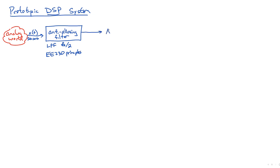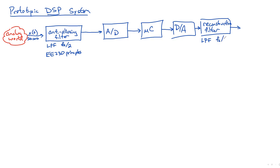Then we bring it into our A-to-D converter. We use a microcontroller or a computer to do all of our work with it. We bring it out through a digital-to-analog converter and put it through something called a reconstruction filter. The end result is that it is the exact same as our anti-aliasing filter - a low-pass filter which passes only frequencies less than F_S over 2. And again, it's something built using EE-230 principles.